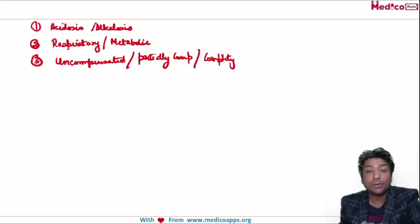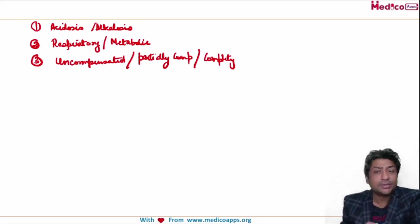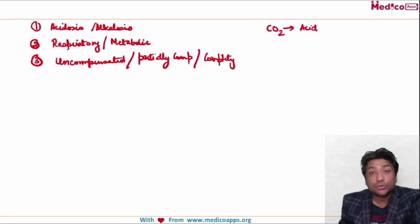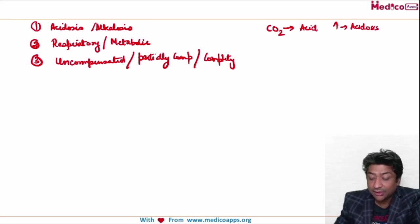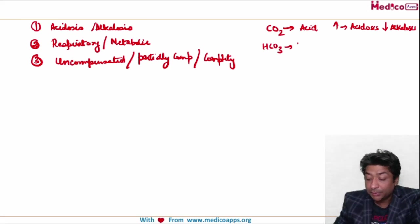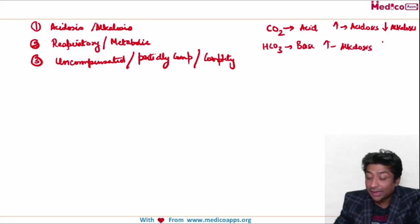Before I move forward, there is a very basic concept I want to talk about. Remember, carbon dioxide represents acid. So whenever carbon dioxide is increasing there is acidosis, and whenever carbon dioxide is decreasing there is alkalosis. The reverse applies to bicarbonate — bicarbonate is your base. So whenever bicarbonate is increasing it is alkalosis, and whenever bicarbonate is decreasing it is acidosis.